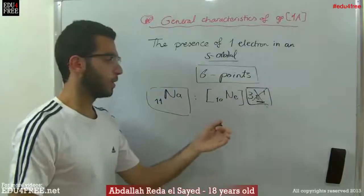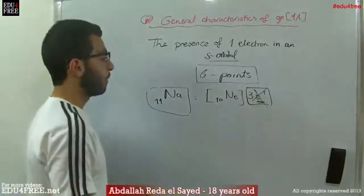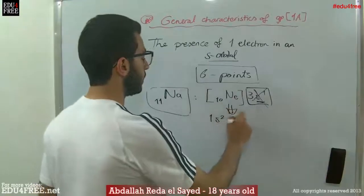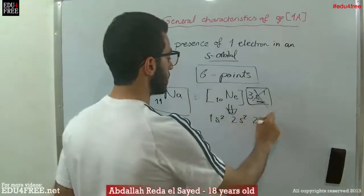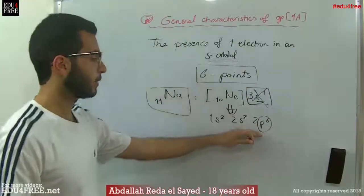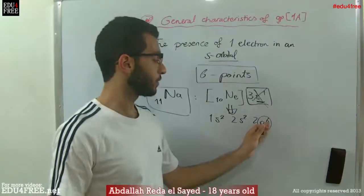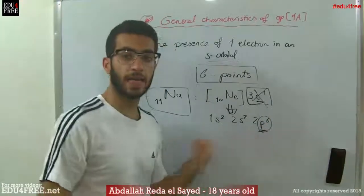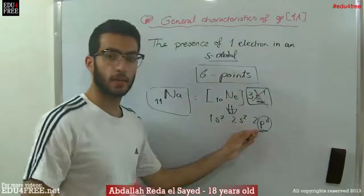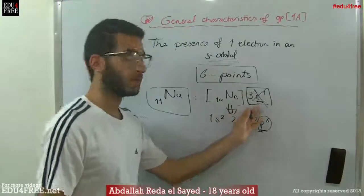The second ionization energy, however, is very high. If you look at the configuration of neon — 1s², 2s², 2p⁶ — removing an electron from the P orbital, which is fully filled and completely stable, requires a very large amount of energy. That is why the second and third ionization energies of these elements are much higher than the first ionization energy.